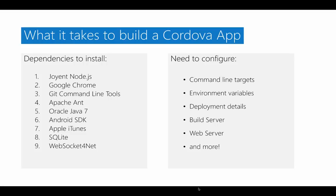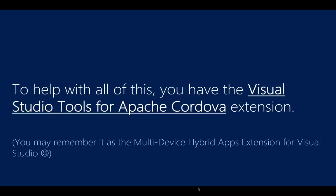In order to build an app for Apache Cordova, there's some setup work involved. You have a lot of dependencies you need to install: Node, Google Chrome, the command line tools for Git, Apache Ant, Java, and so on. Installing these dependencies is only one part. The next part is configuring them – not only the dependencies you installed, but also your environment in general. That includes command line targets, environment variables, deployment details, and web servers. All of these things are not hard, but they are time-consuming, and after all, you and I probably just want to build really cool apps.